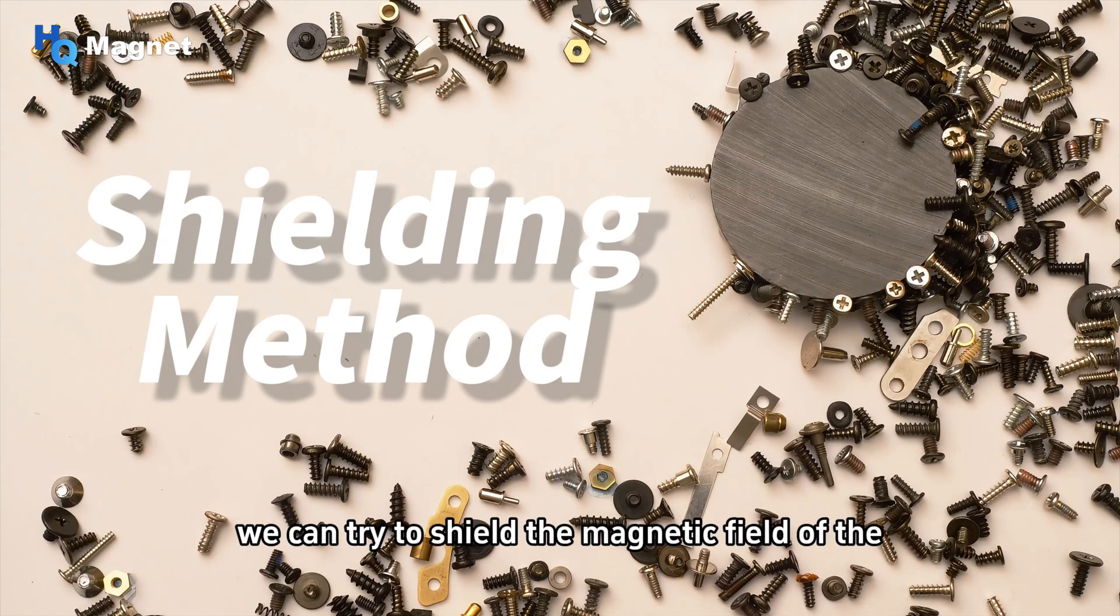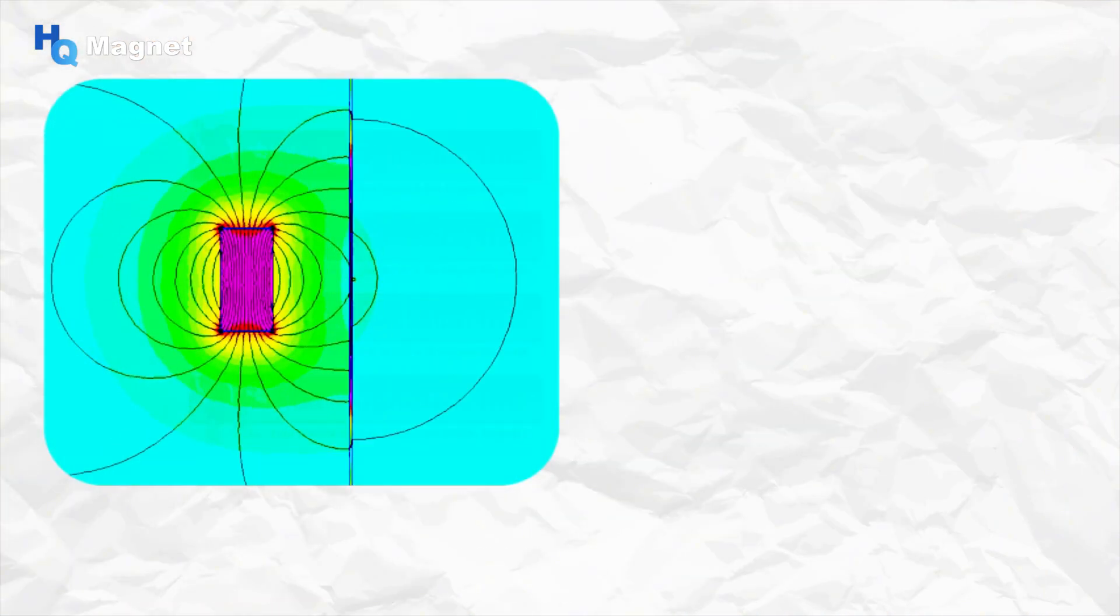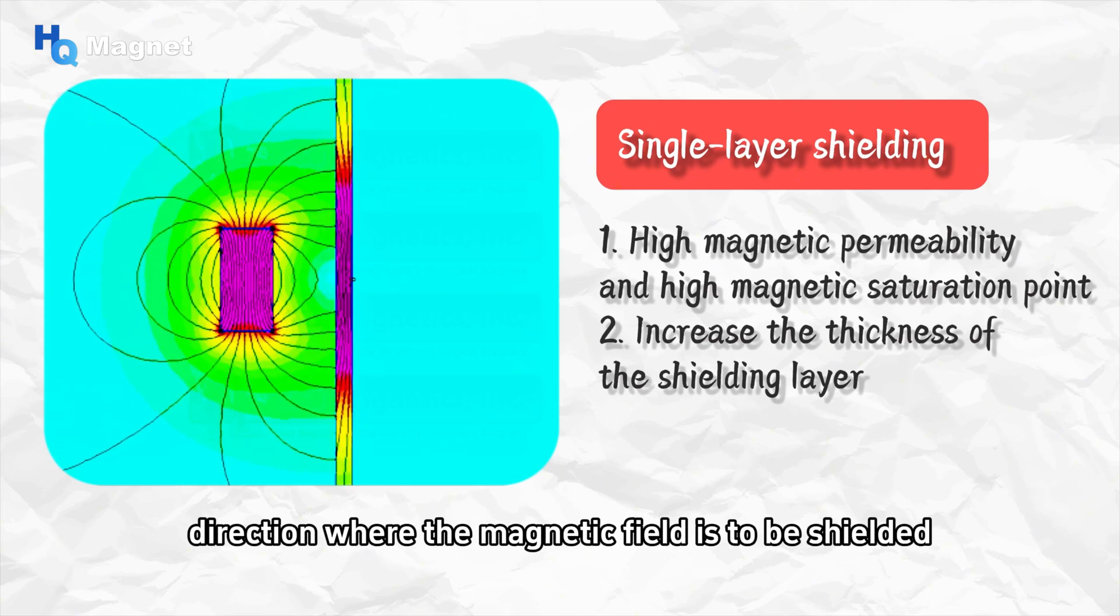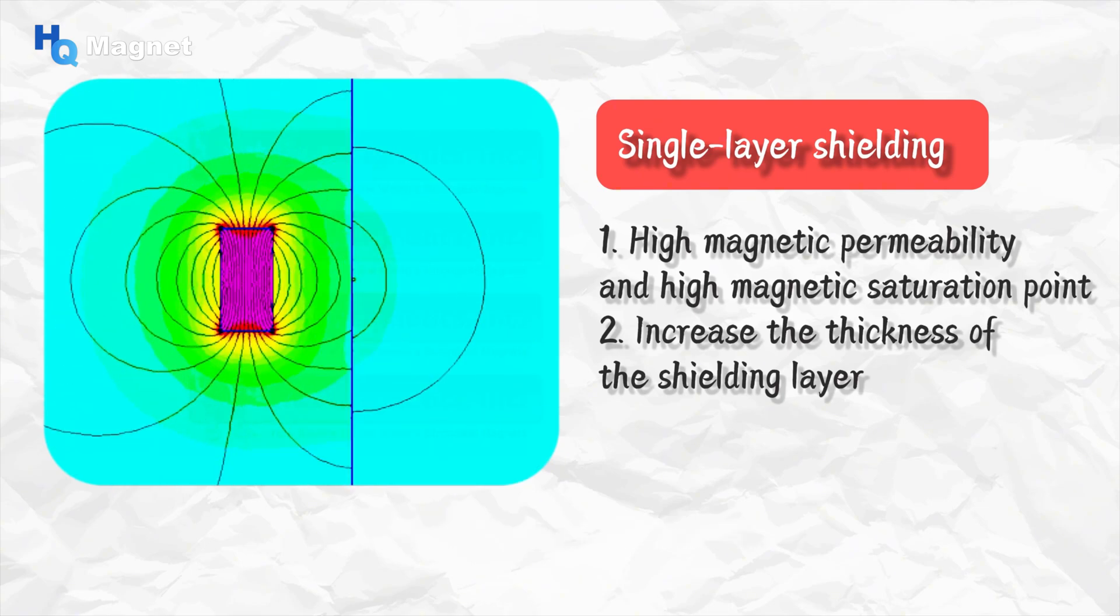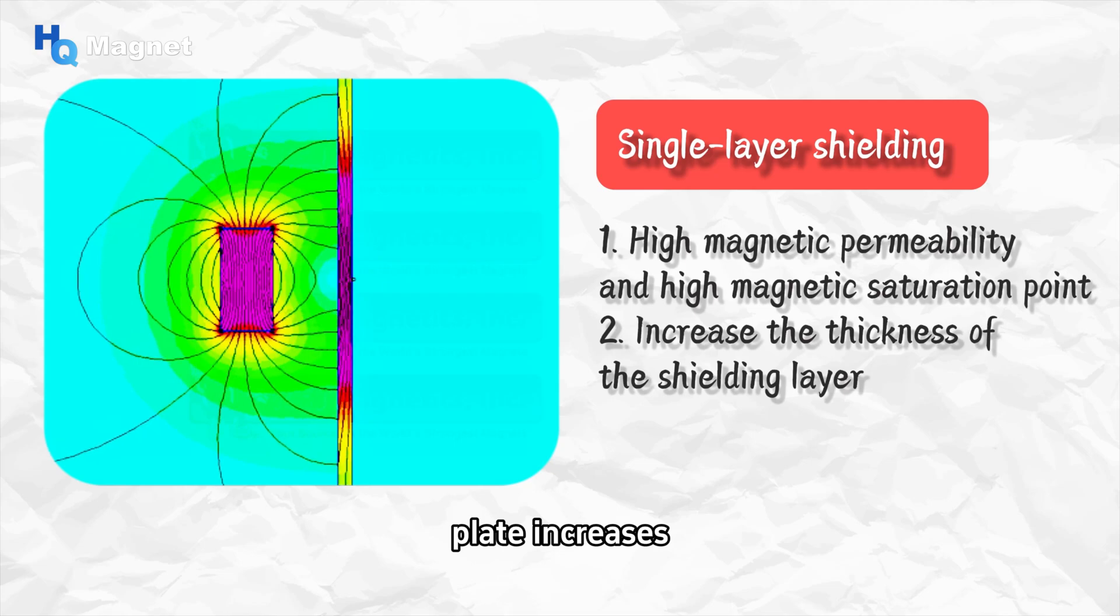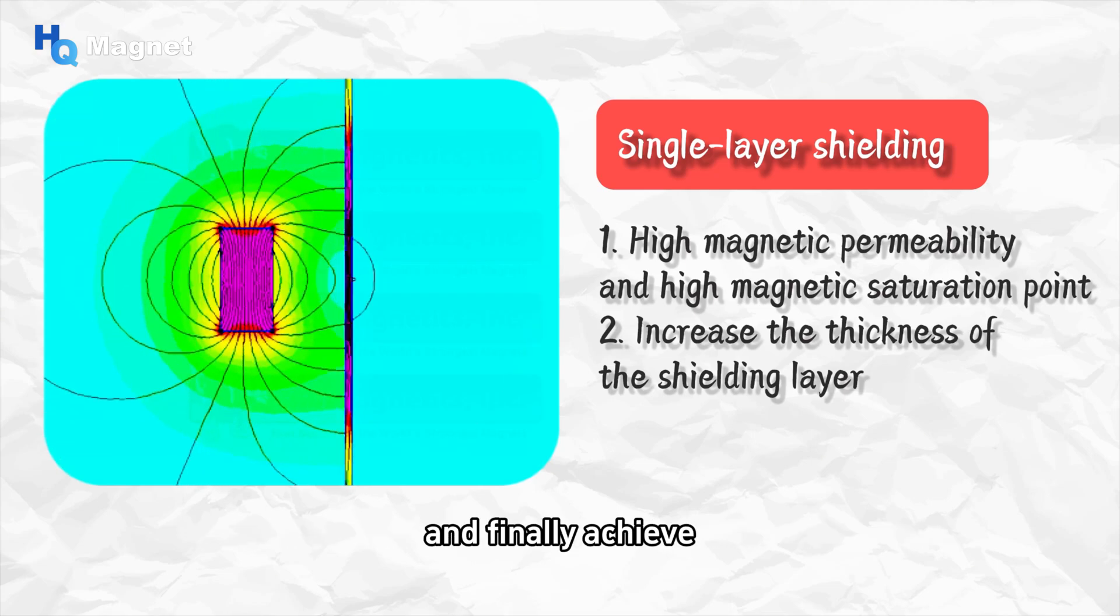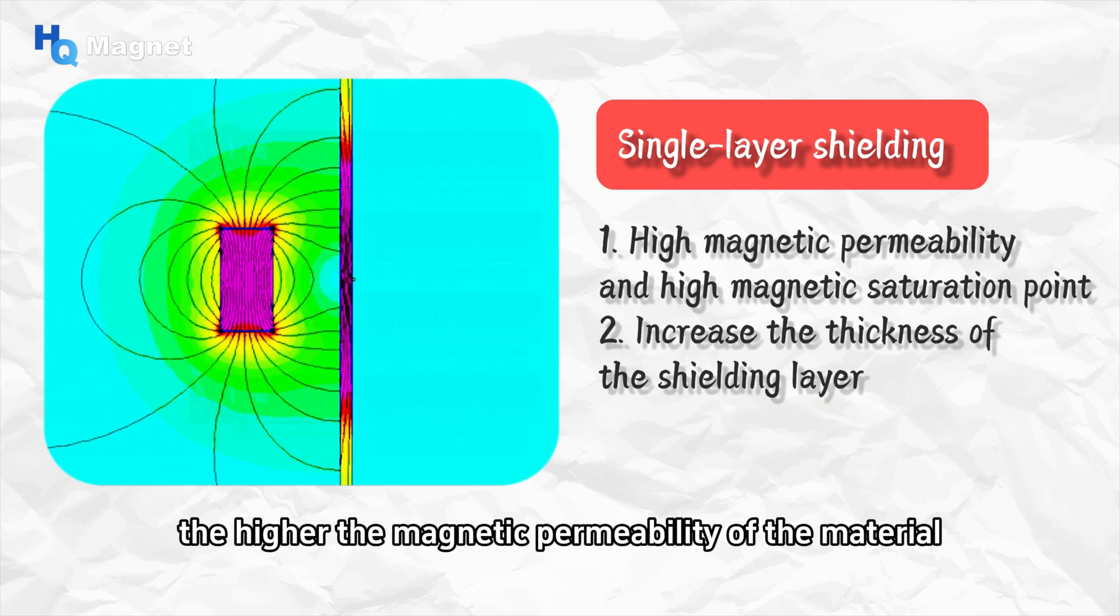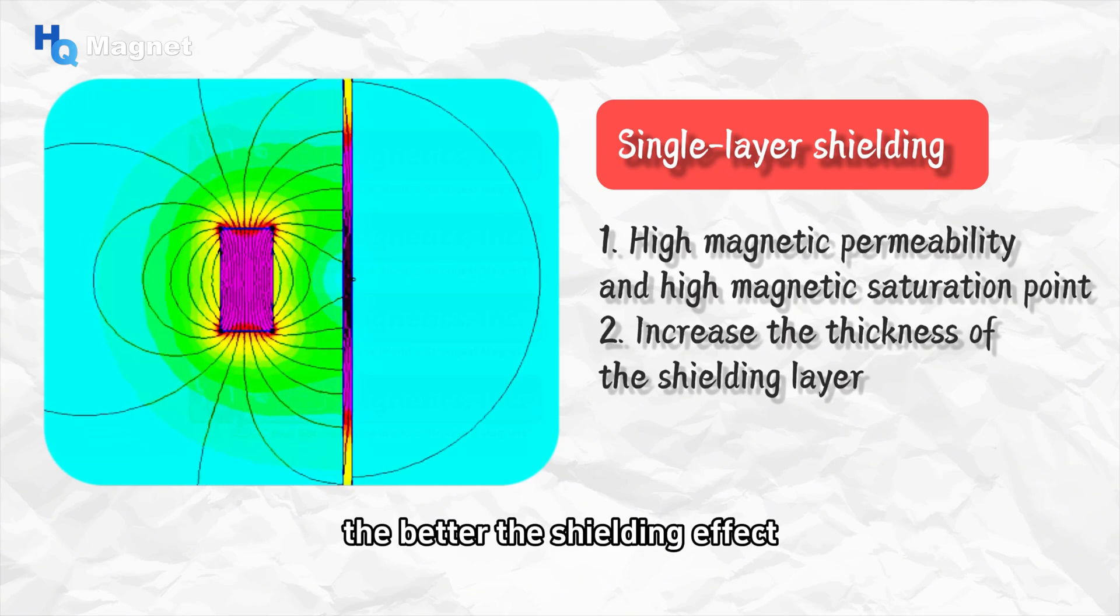After understanding the above knowledge, we can try to shield the magnetic field of the permanent magnet. Generally, simply placing an iron plate in the direction where the magnetic field is to be shielded can effectively shield most of the magnetic field in that direction. It can be seen from the figure that as the thickness of the iron plate increases, the shielding layer can guide more magnetic field lines through the shielding layer and finally achieve effective shielding on one side of the magnetic field. The higher the magnetic permeability of the material and the thicker the shielding layer, the better the shielding effect.